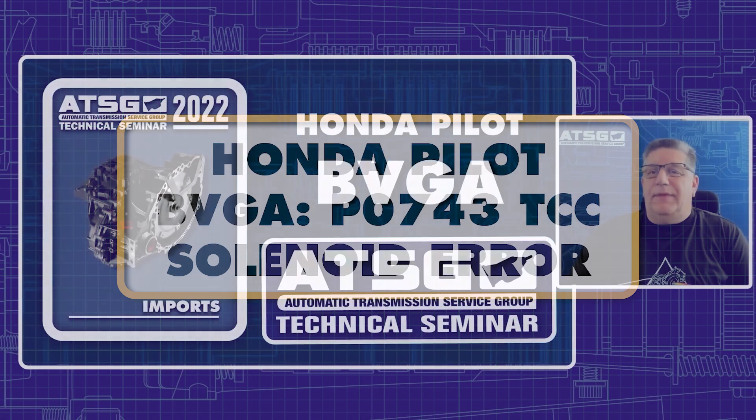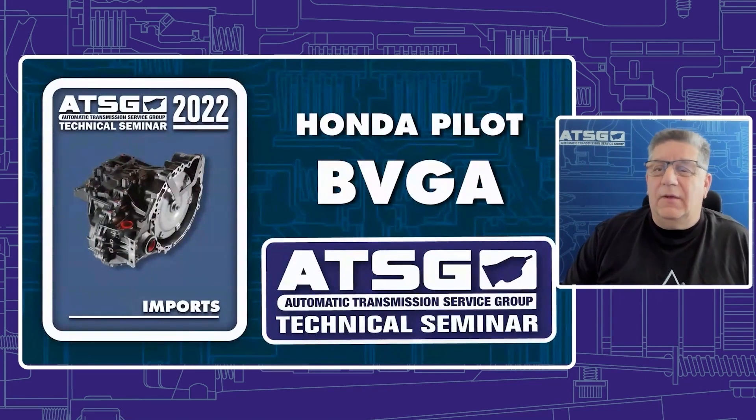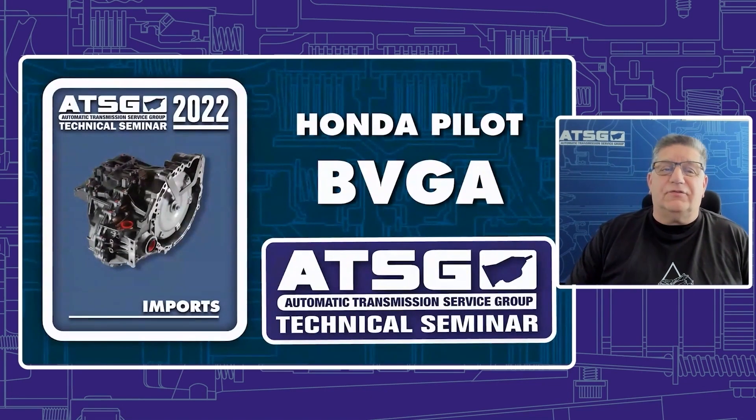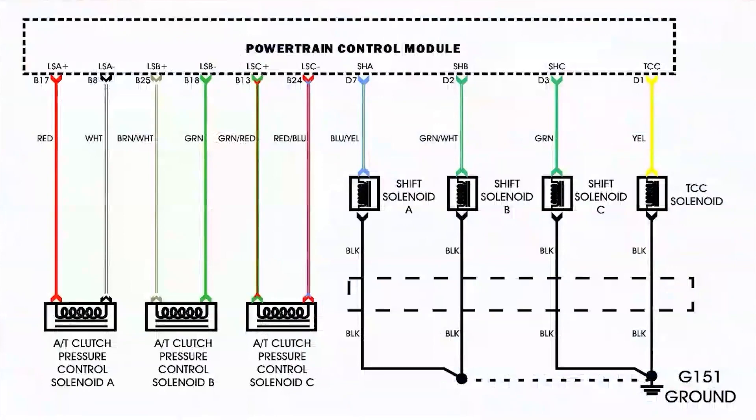This was a code PO743 for torque converter clutch solenoid. There is the wiring schematic of it, and what was found on this vehicle was the G151 ground terminal was compromised.